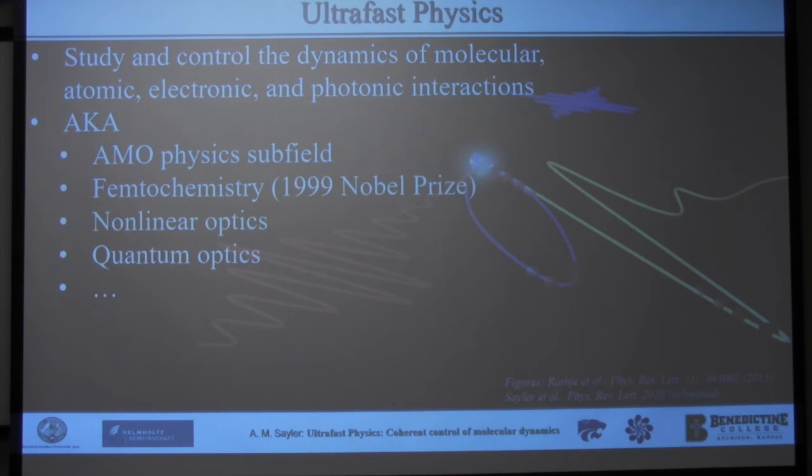So what is ultrafast physics in general? It's the study and control of the dynamics of molecules, atoms, electrons, and photonic interactions. As we described with this picture, sometimes it comes under the heading of AMO physics: atomic, molecular, and optical physics. Sometimes if you come from a chemistry discipline, this is the same thing as femtochemistry, only approach it in a little bit different way. Sometimes it's also called just nonlinear optics or quantum optics.